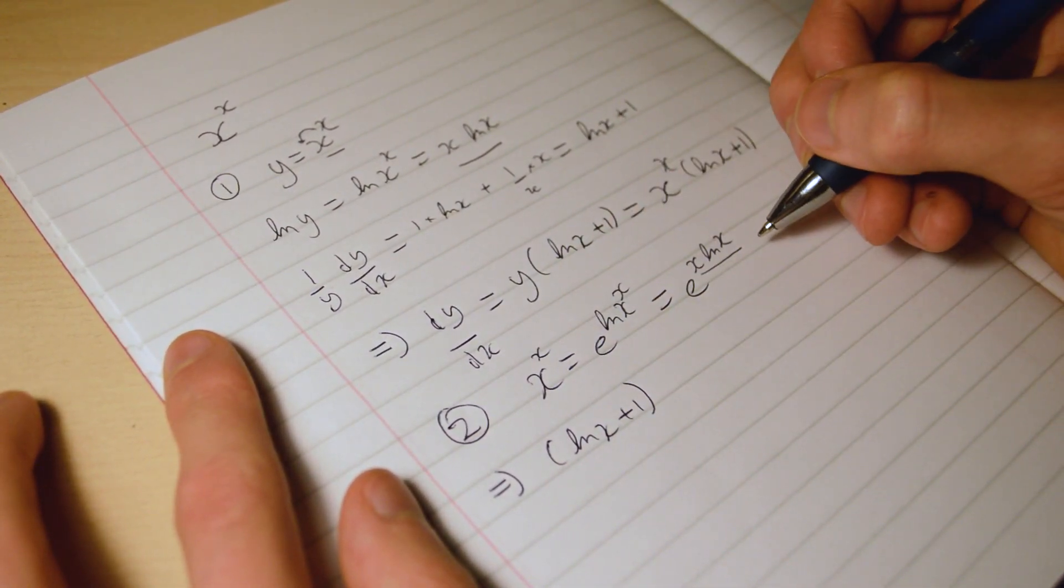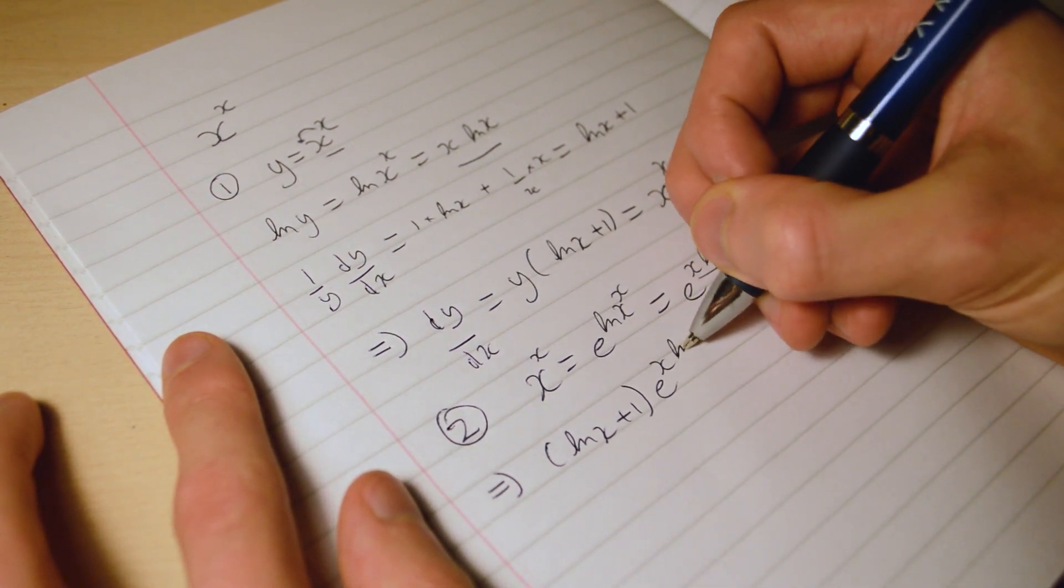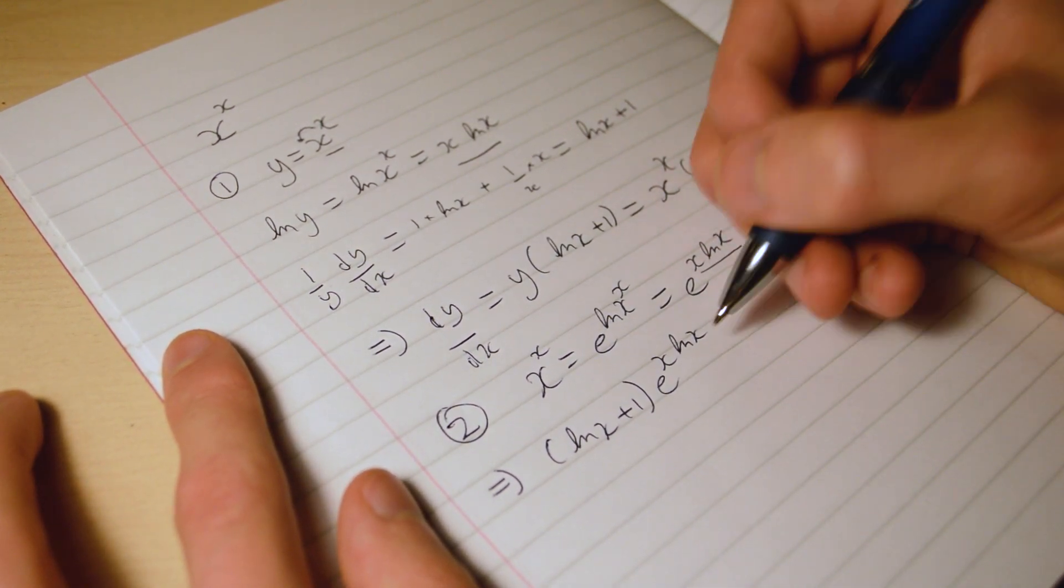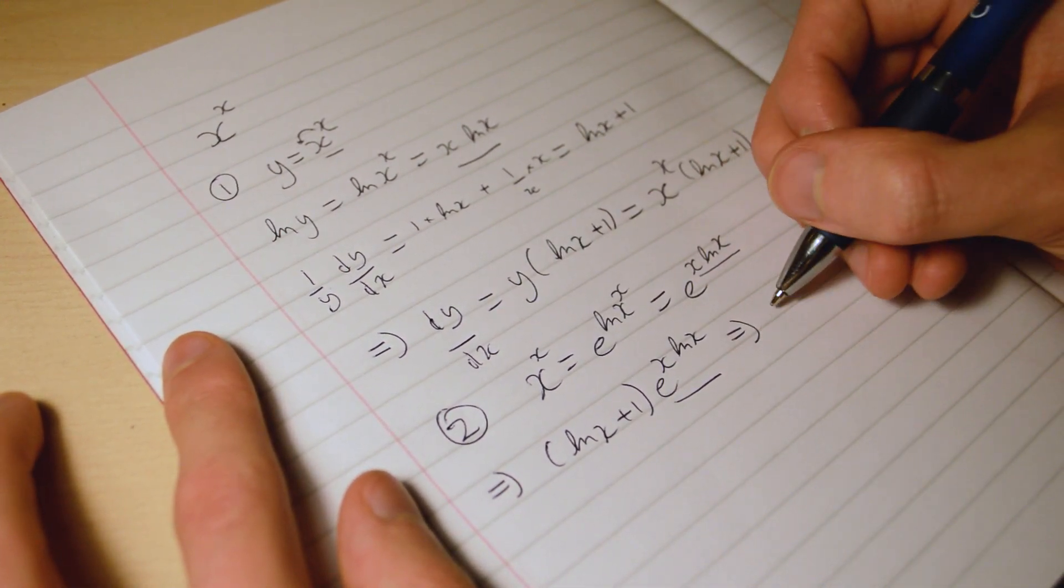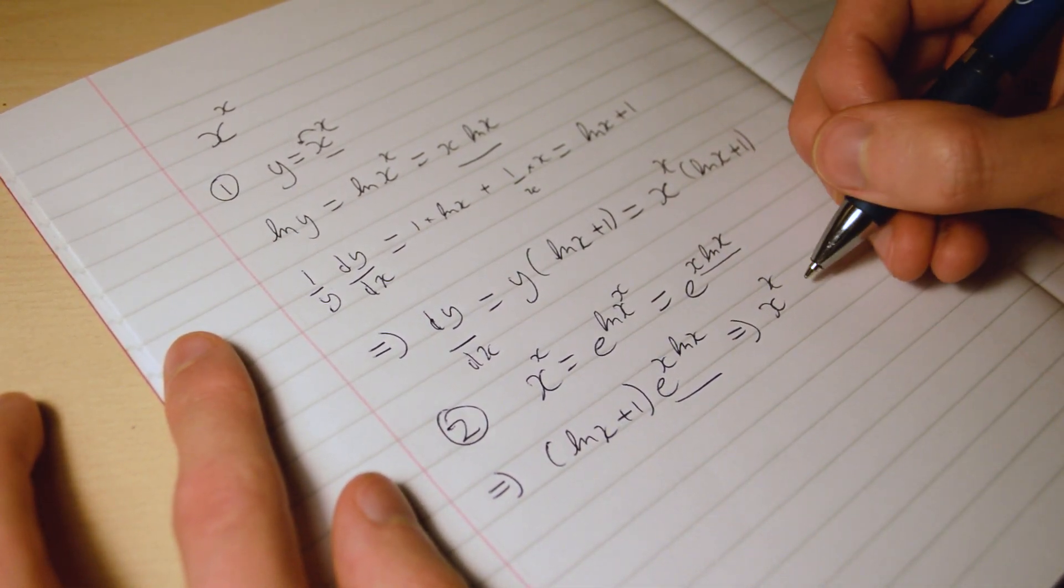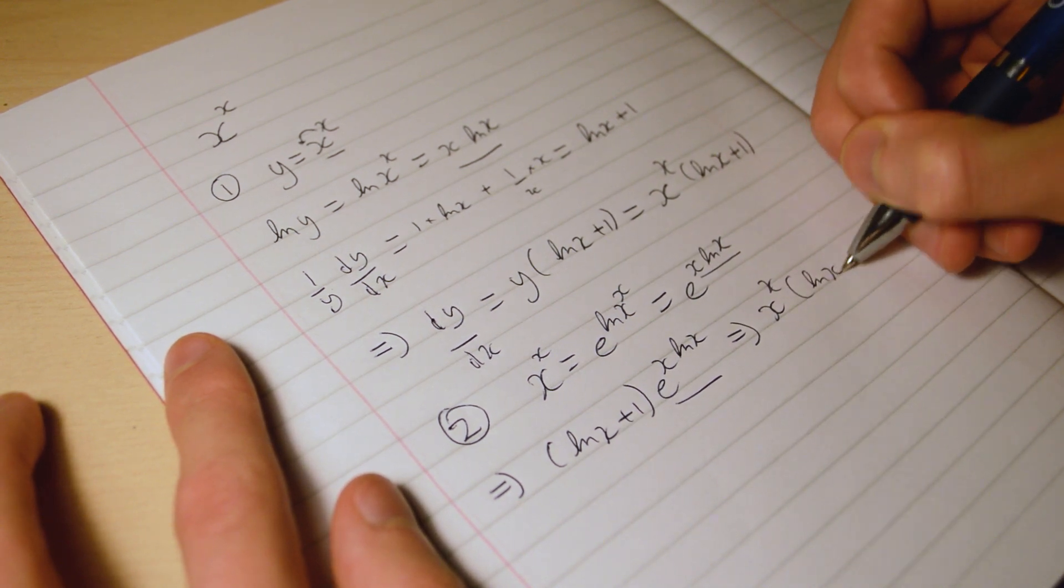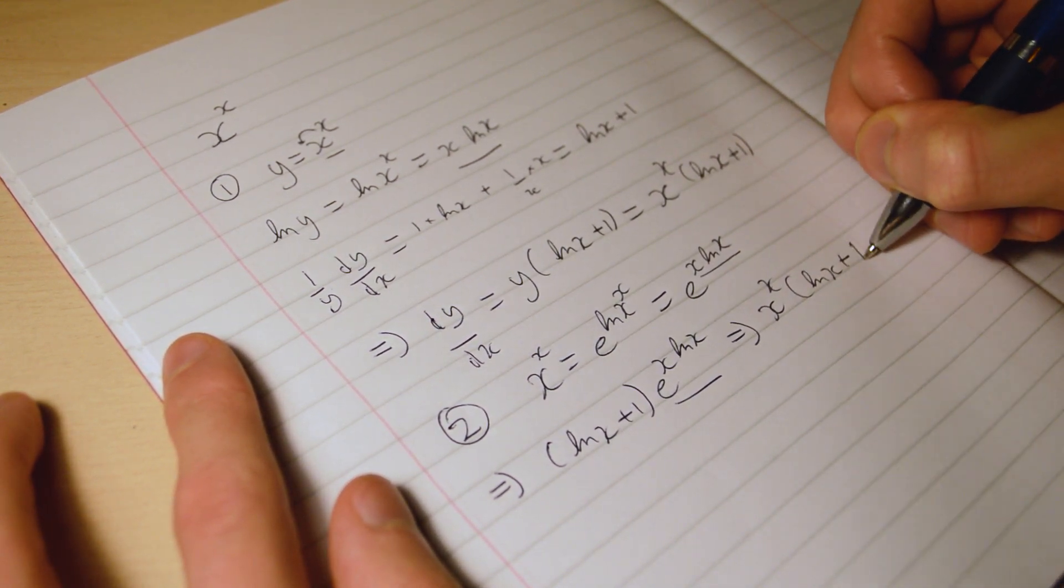And we know that this is equal to x to the x, so therefore the answer is once again x to the x times (log x plus 1).